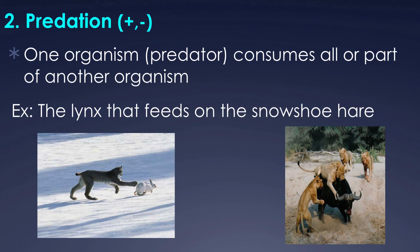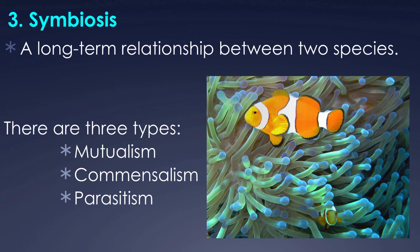The next type of interaction is called symbiosis. Symbiosis is a long-term relationship between two species. Within symbiosis — meaning living together — there are three different types: mutualism, commensalism, and parasitism.